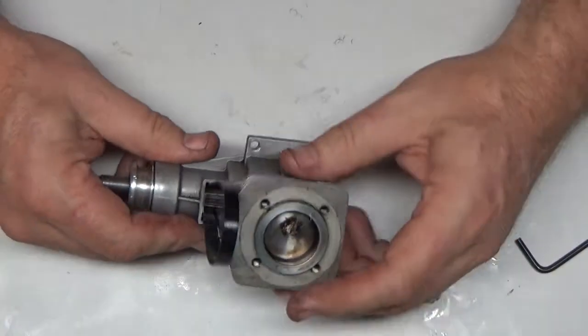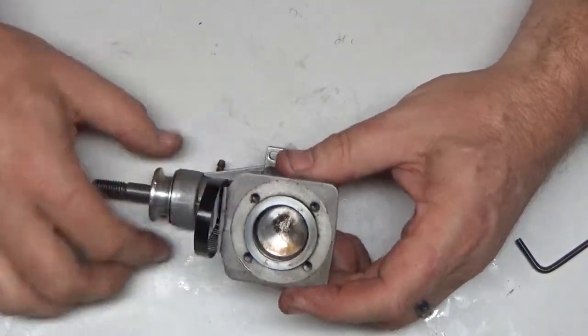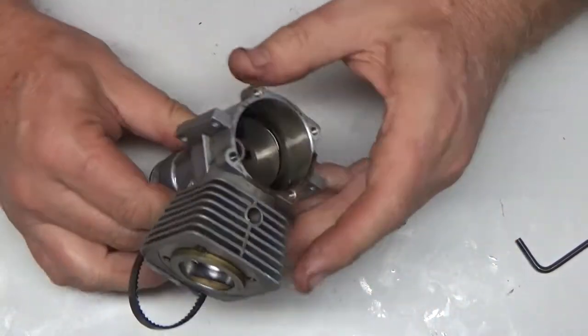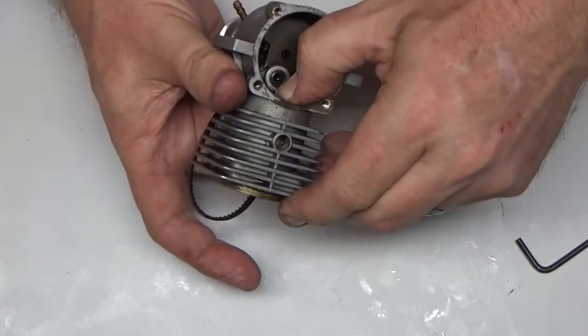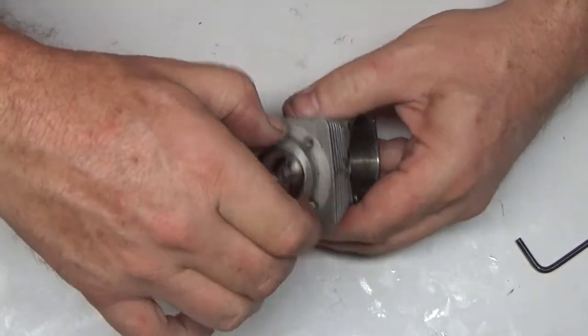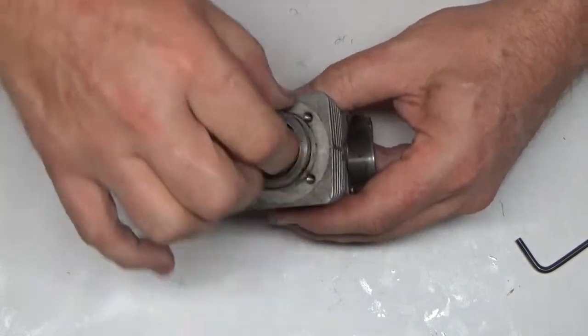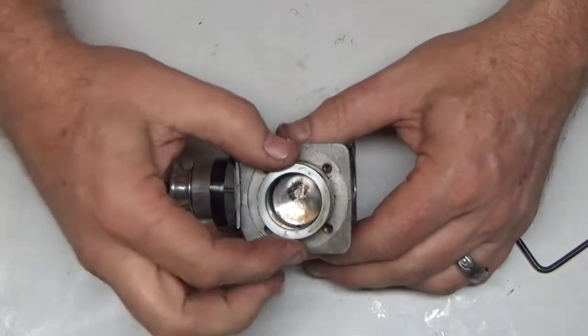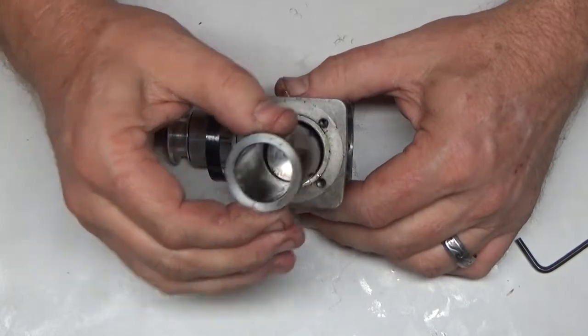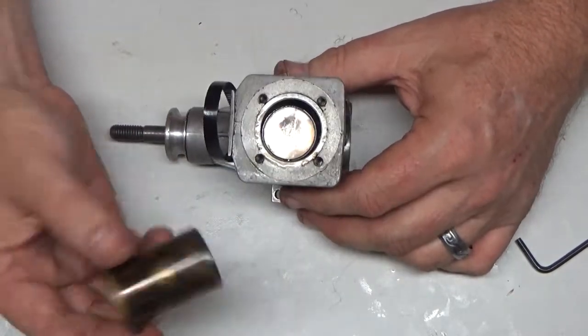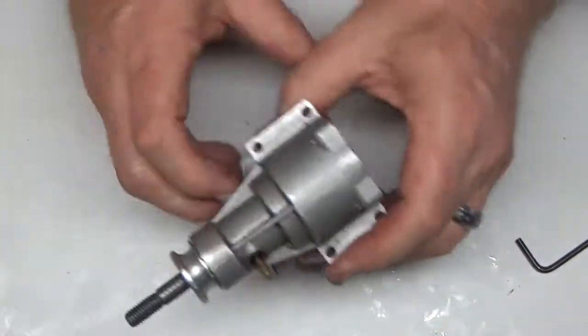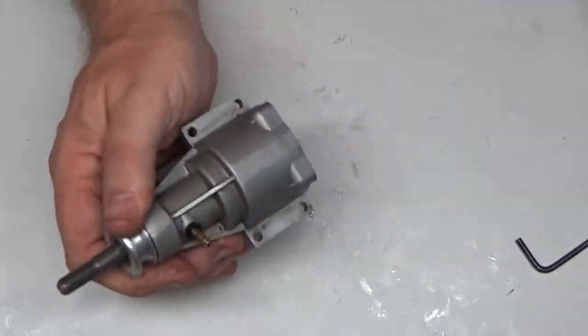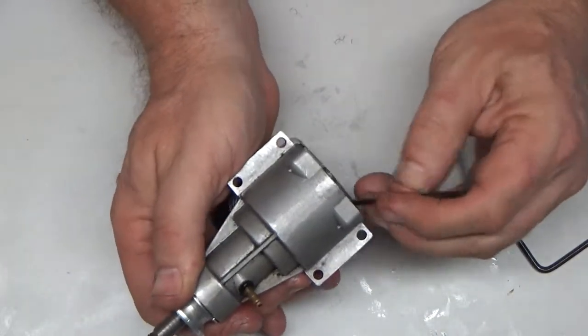So obviously this belt can't come off until all this stuff comes off. And I have a feeling that's my sleeve there. Oh, look at that. I just pushed on the sleeve and it's coming right out. So that's kind of cool. There we go. There's our sleeve. Now let's see if we can get this piston to come out.